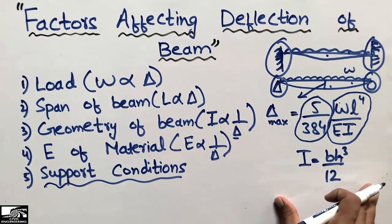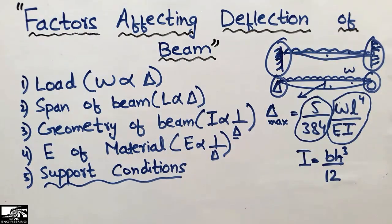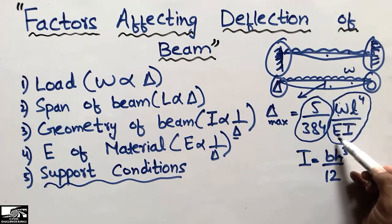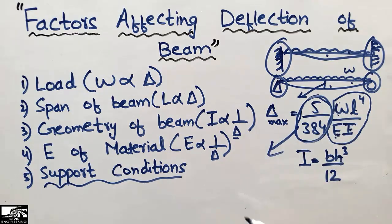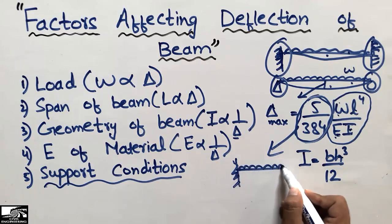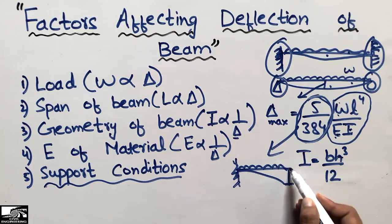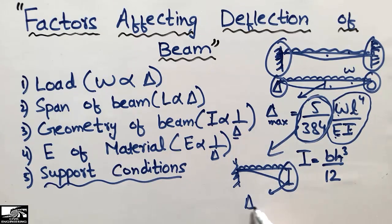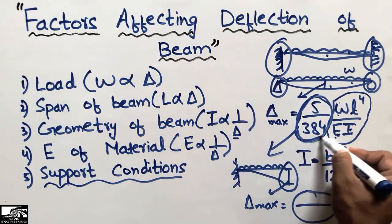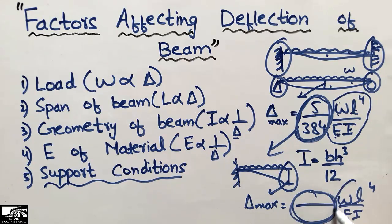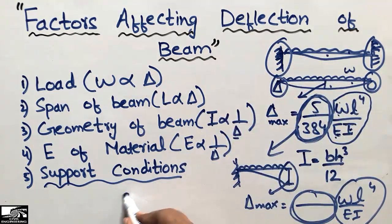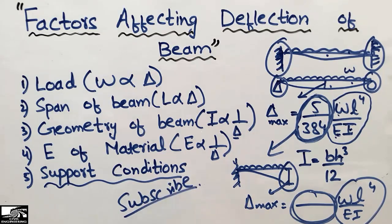I hope you understand the concept behind the factors affecting the deflection of the beam. These factors — load W, length L, modulus of elasticity E, and moment of inertia I — are the same for every type of beam, while the constant changes. For example, a cantilever beam with a uniformly distributed load will have maximum deflection at the free end, with a different constant factor compared to the 5/384 used for a simply supported beam. Please don't forget to subscribe for daily Seven Engineering videos. Thank you for watching.